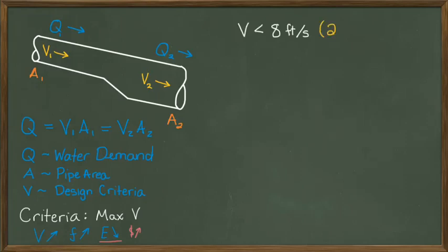So, a common maximum velocity specified within a given water system is 8 feet per second, or 2.5 meters per second. Using this as our design criteria, we can size a given pipeline.